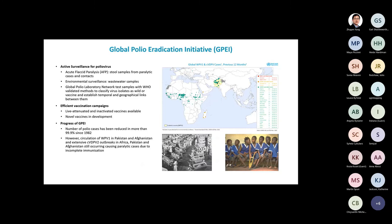In terms of progress on the global polio eradication initiative, it was very successful during the initial phases — 99.9% of cases were reduced. But there is still circulation of wild-type poliovirus type 1 in Pakistan and Afghanistan, and extensive circulation of vaccine-derived viruses in Africa, Pakistan, and Afghanistan. The vaccine is not stable: if given in areas of low immunity, it can evolve and revert to wild-type properties. Unfortunately, most cases in recent years have been due to the vaccine.